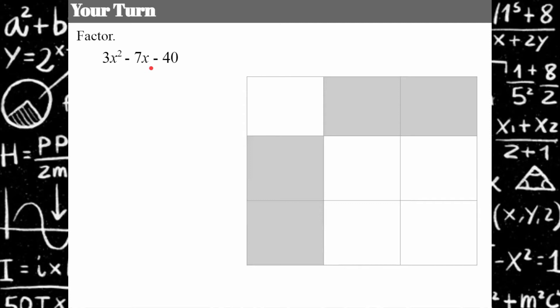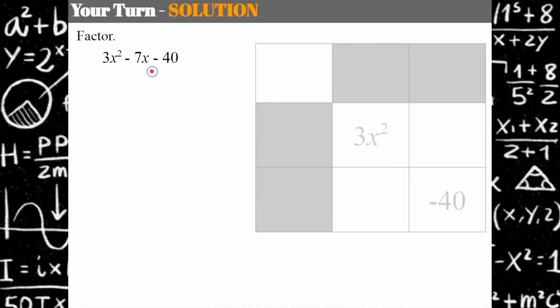Welcome back. Let's see how you did. I'm going to start out by filling in my table with my first term and my last term and find the product of a times c. Remember this is positive 3 times negative 40, that's negative 120.